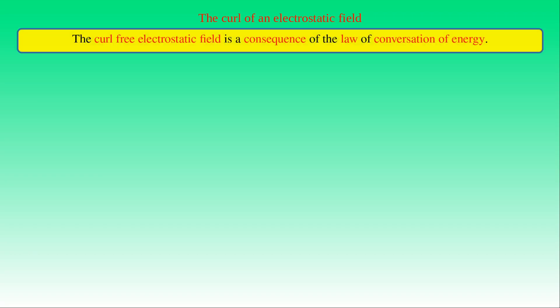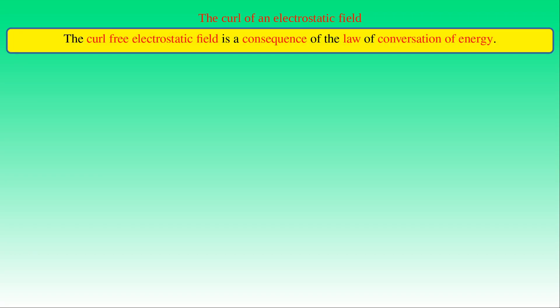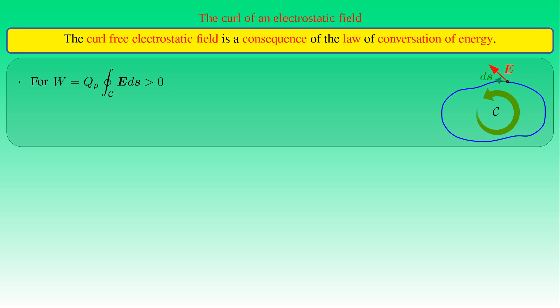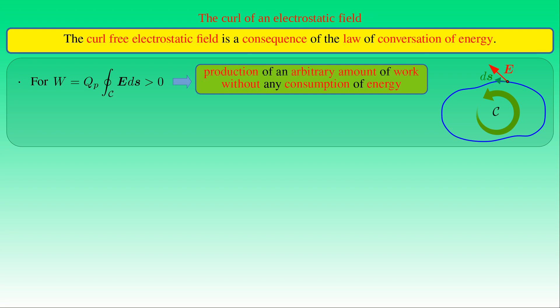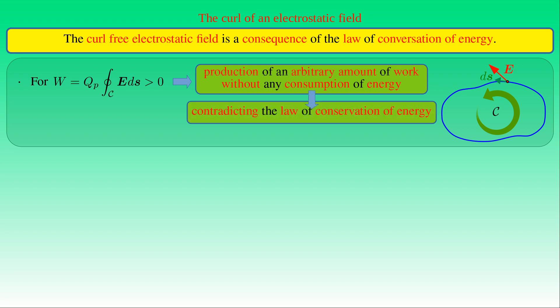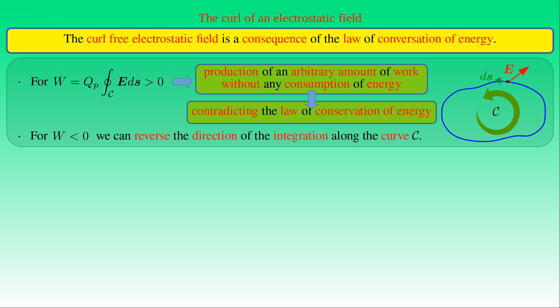The statement that the electrostatic field is curl-free follows from the law of conservation of energy. If the work W done while test charge QP is brought along closed curve C were greater than zero, an arbitrary amount of work could be produced without energy consumption, since neither QP nor the electrostatic field change during motion along a closed curve. Since doing work without energy input contradicts conservation of energy, the line integral cannot be greater than zero. By the same argument for W less than zero (reversing the direction), conservation of energy implies W must be zero along any closed path.